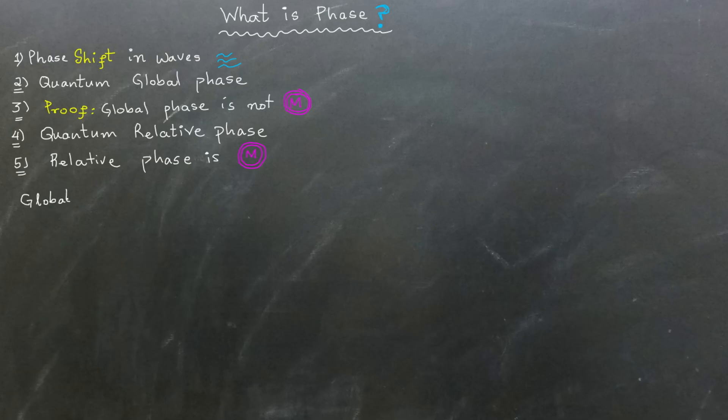Now, here is an important concept to remember. When it comes to measurement, we can never distinguish between two quantum registers that are in the same state but differ only in their global phase. The global phase does not affect the measurement outcome of our quantum state. Let's quickly prove it.